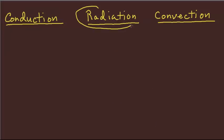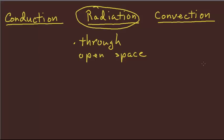Radiation you can think of as heat transfer through open space. The most obvious example is that the sun shines and the heat travels through open space. You don't touch it. So radiation is kind of like opposite of conduction where conduction is where they're touching and radiation is not touching.